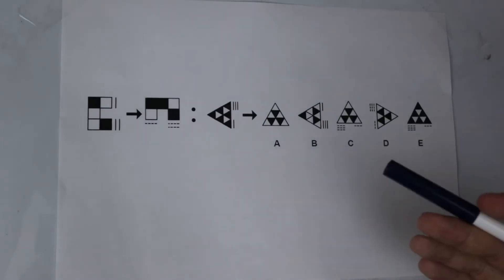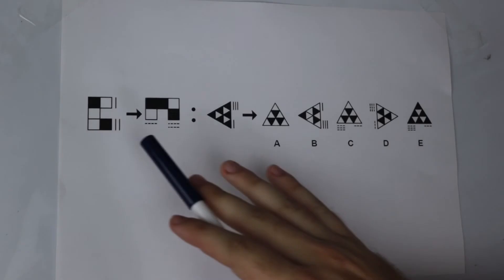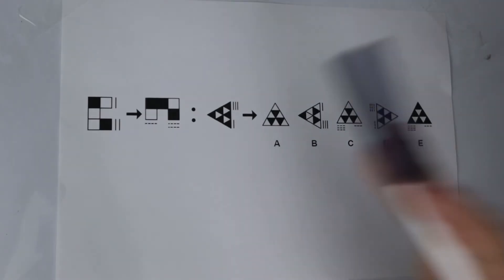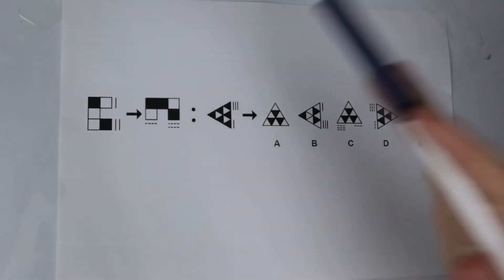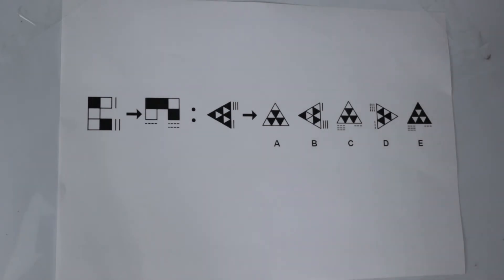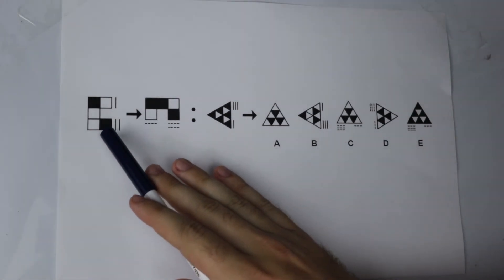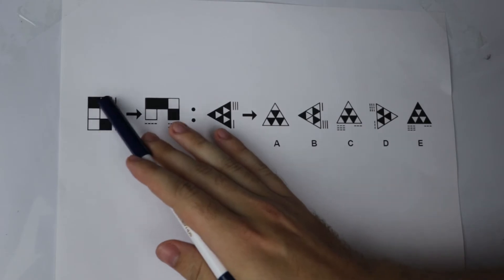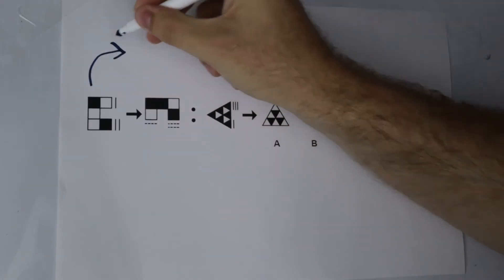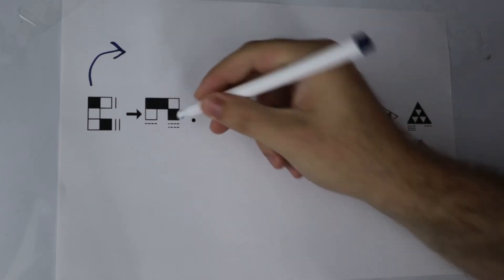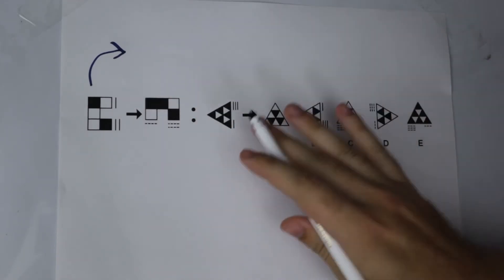So here is another question and this time we have made it a bit more complicated. And as you can see there is lots going on. But let us use the technique we talked about. Let us look at the first transformation and isolate one feature at a time. So the first thing I notice here is that this shape here, like a C shape, has been rotated 90 degrees clockwise to make this shape here.